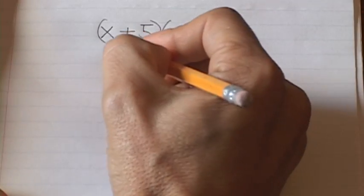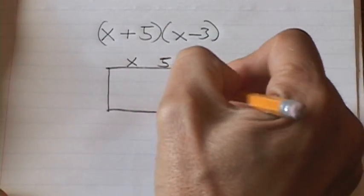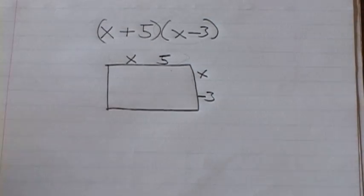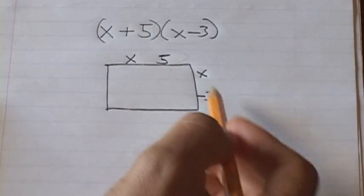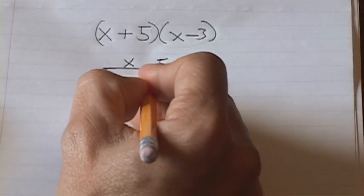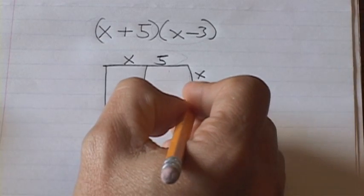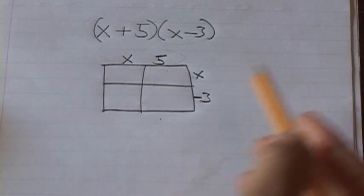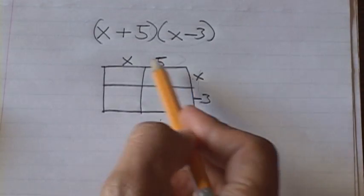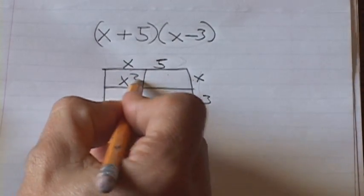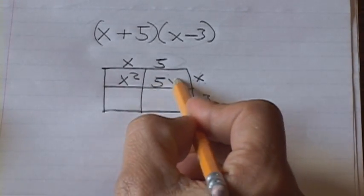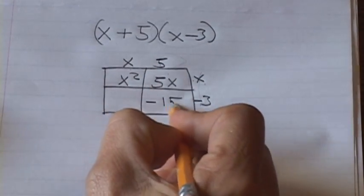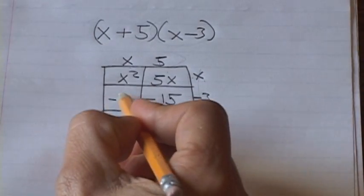So basically, you make a box and you list one of the factors up here: x plus 5. Then you have x and minus 3 — here's one binomial, and here's the x minus 3 binomial. You treat this as an area problem: length times width tells you what the area is inside. You make a column for x and a column for 5, then a row for x and a row for negative 3, and you just multiply. You get x times x equals x squared, x times 5 equals 5x, 5 times negative 3 equals negative 15, and negative 3 times x equals negative 3x.